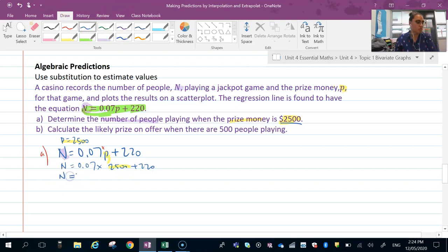Times 2,500 plus the 220. Then turn in a quick squeeze in your calculator. The number of people that need to play for the cash amount to be $2,500 needs to be 38,500 people.